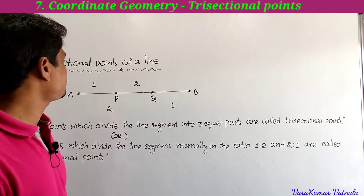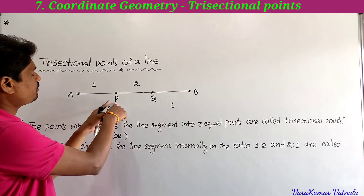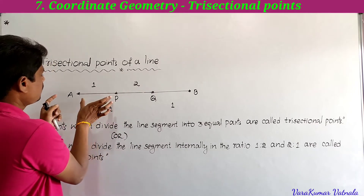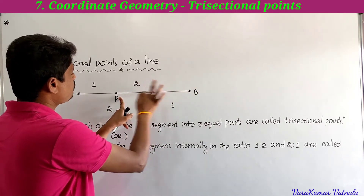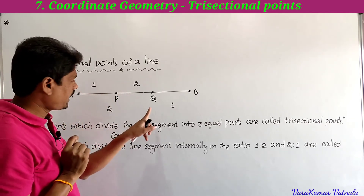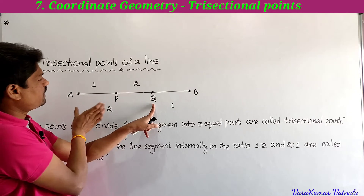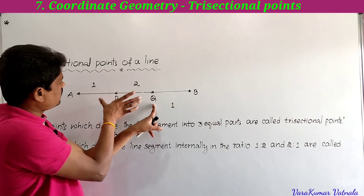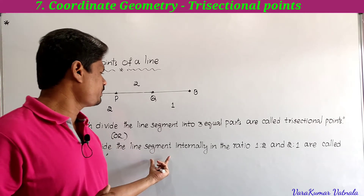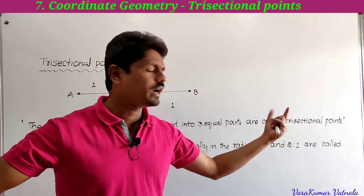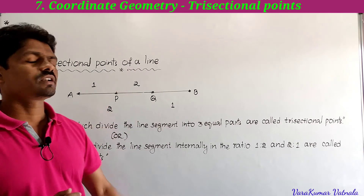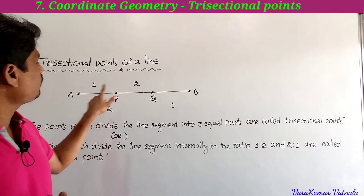Point P is dividing the line segment AB in the ratio 1 : 2 internally — here it is one part, and those two are the two parts. Point Q is dividing the line segment AB internally in the ratio 2 : 1 — here it is two parts and one part. So the points which divide the line segment internally in the ratio 1 : 2 and 2 : 1 are called trisectional points.